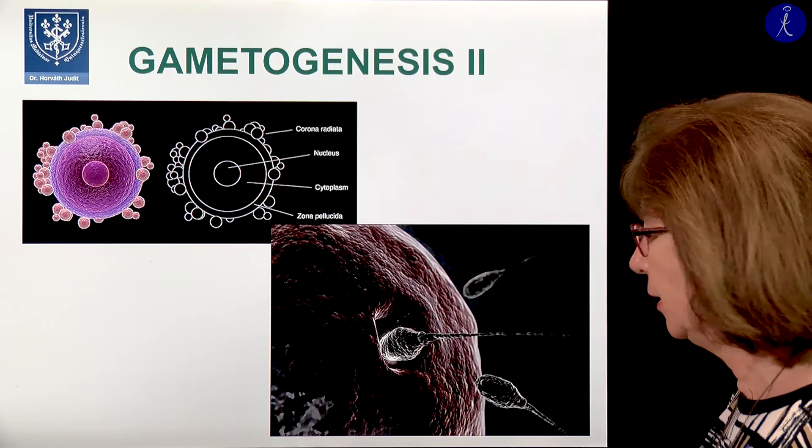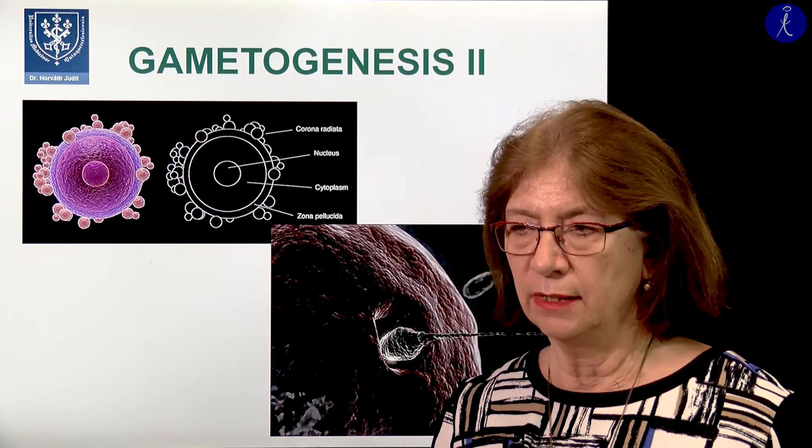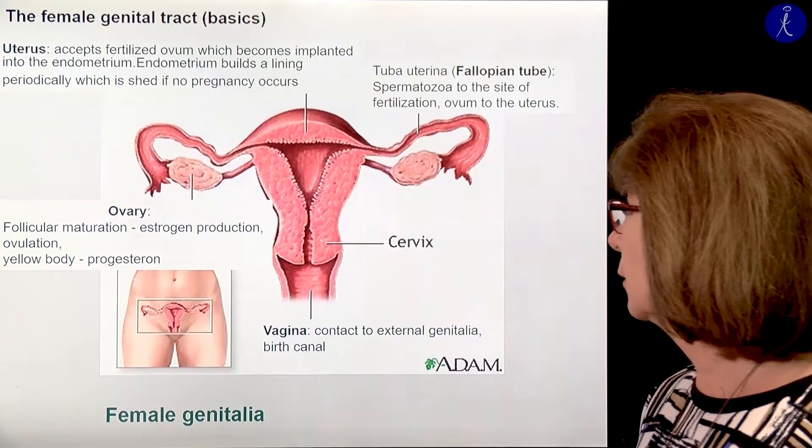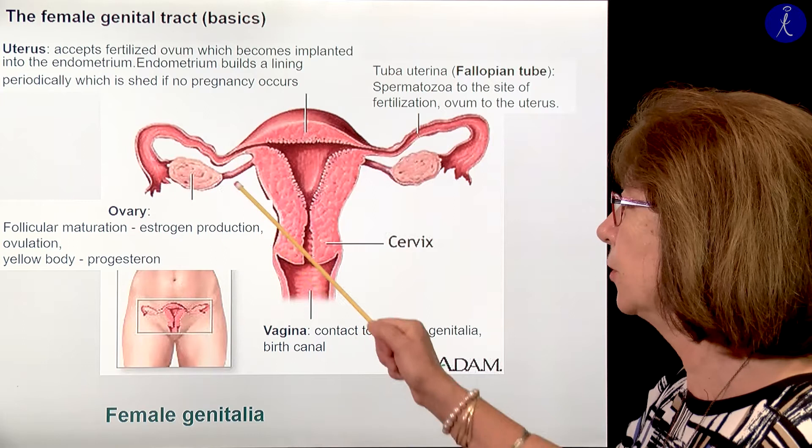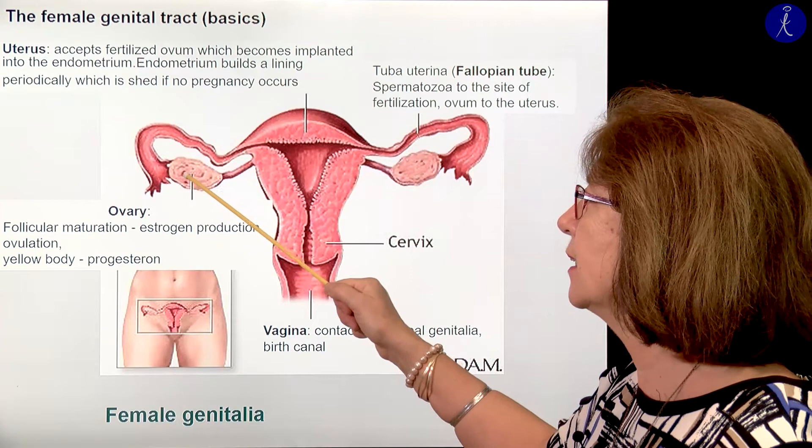There you see the sperm cell penetrating and fertilizing the oocyte. About fertilization, we will talk in the coming lecture, not in this one. Last time we discussed the details of the female genital tract. Ovaries are the site where the follicles mature and the oocyte is released to the uterine tube.